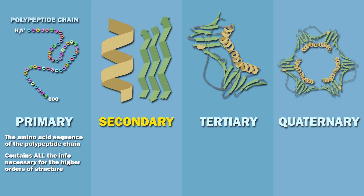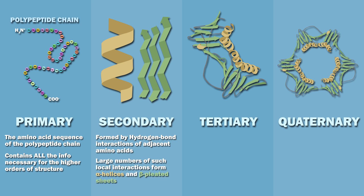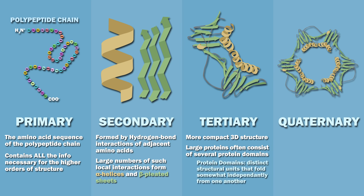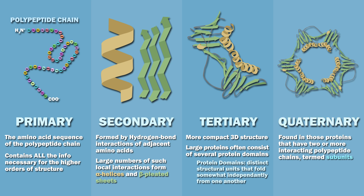The secondary structure is formed by hydrogen bond interactions of adjacent amino acids. Large numbers of such local interactions form alpha helices and beta-pleated sheets. The tertiary structure is a more compact three-dimensional shape. Large proteins often consist of several protein domains, which are distinct structural units that fold somewhat independently from one another. Quaternary structure is found in those proteins that have two or more interacting polypeptide chains, which are then termed subunits.